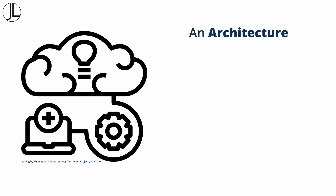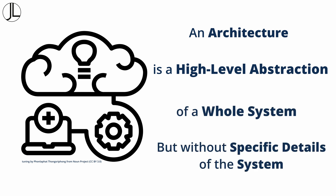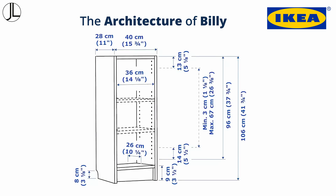An architecture is a high-level abstraction, or a summary, of a whole system, and does not define specific details of the system. The architecture of our IKEA product, Billy, is a schematic that describes the structure, components, parts, and function.